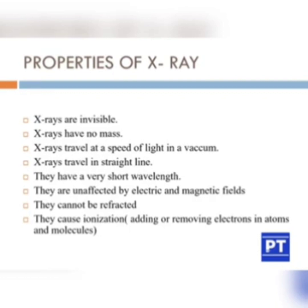The properties of X-rays are commonly asked in exams. X-rays are invisible — radiation cannot be seen. X-rays have no mass. They travel at the speed of light in a vacuum. They travel in a straight line. They have a very short wavelength. They are unaffected by electric and magnetic fields and cannot be refracted.